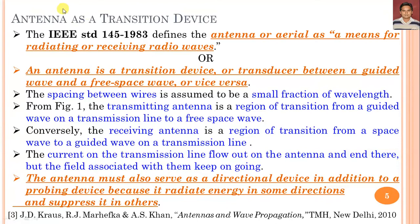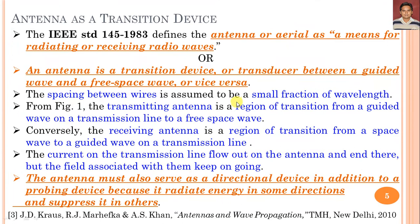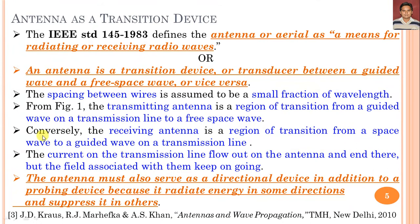We can define the antenna with specific standards. In the IEEE standard, the antenna, or aerial, is defined as a means of radiating or receiving radio waves. An antenna is a transition device or transducer between a guided wave and a free space wave, and vice versa. The spacing between the two wire lines is assumed to be a small fraction of the wavelength. In a transmitting antenna, the transition region goes from guided one-dimensional EM waves on a transmission line to free space electromagnetic waves. Conversely, in the receiving antenna, it is a region of transition from a space wave to the guided wave over a transmission line.